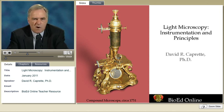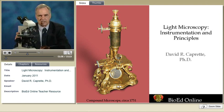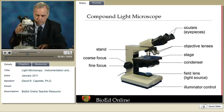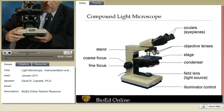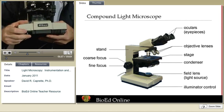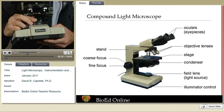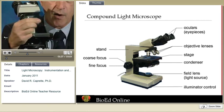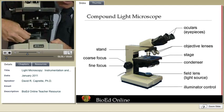Modern compound light microscopes are wonderful instruments. This one, for example, can see anything that's living — any living specimen at all, no matter how tiny. The features of a compound microscope start with an illuminator. You have to have a light source. This one has a built-in illuminator with an intensity control so that light comes up through an opening in the base. We have on here a daylight filter, which takes the yellow out of the tungsten bulb and gives you a truer color image when looking at a stained specimen.